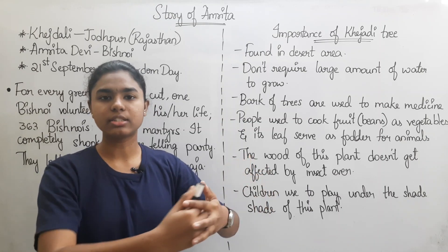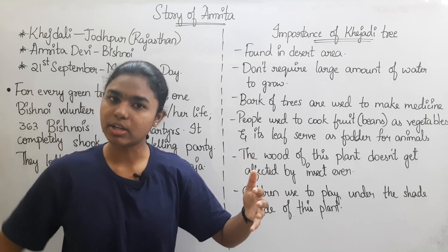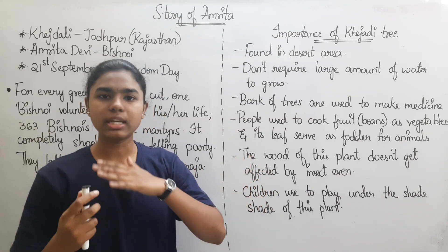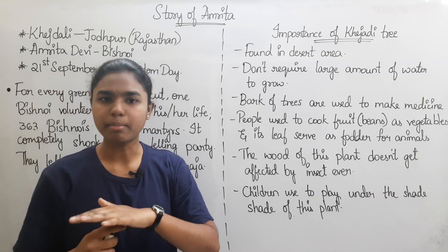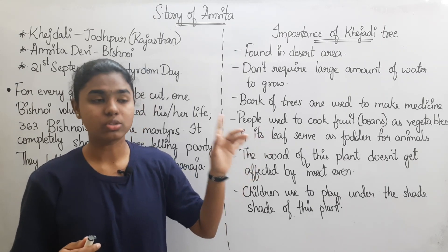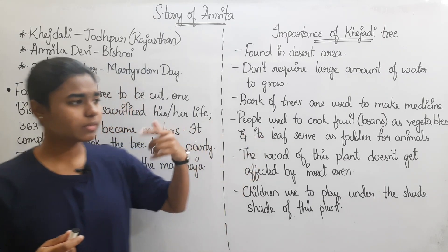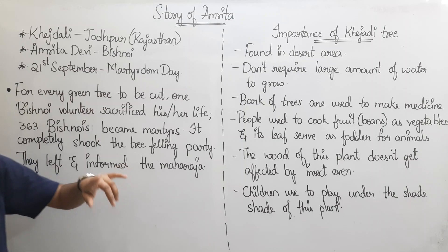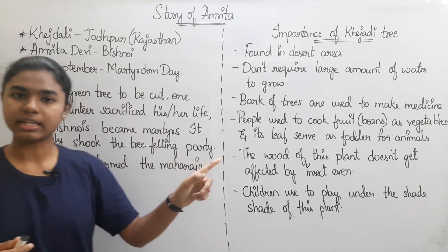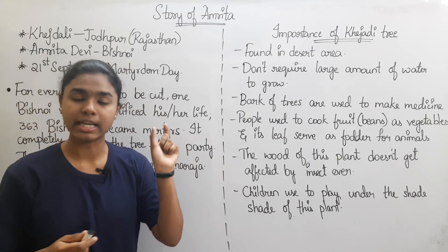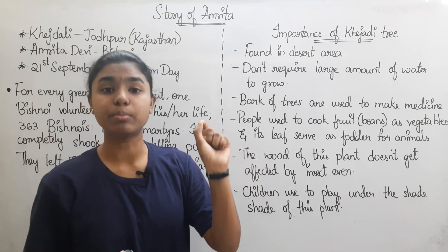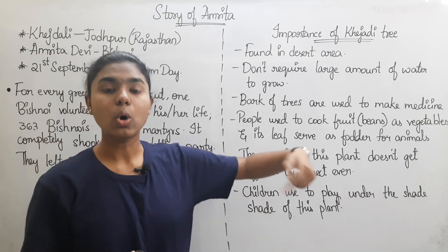Amrita Devi had 3 daughters. Soldiers came from the village. According to the NCERT textbook, 363 Bishnois sacrificed their lives to protect the Khejri trees.